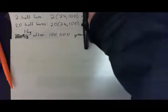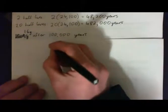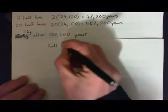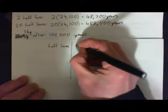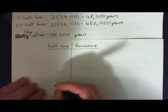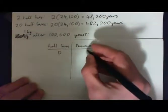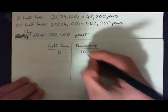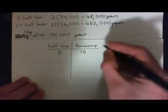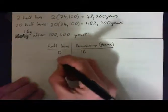The half-lives are just zero, one, two, three, four — and then we look at how much is remaining, the amount. So zero half-lives is right now. How much is remaining? We're starting with 16 grams. Remaining in grams. After one half-life, how much have we got remaining?